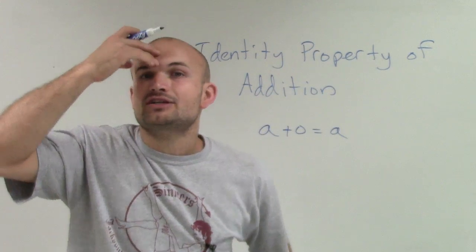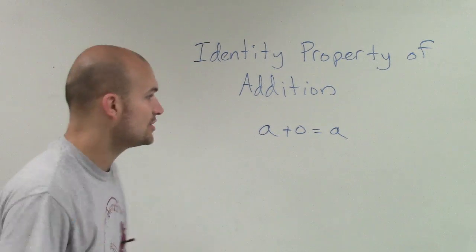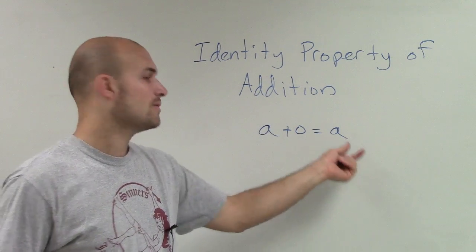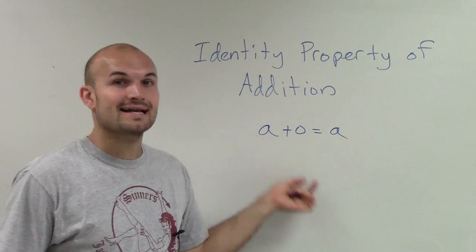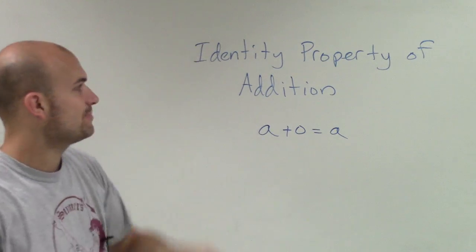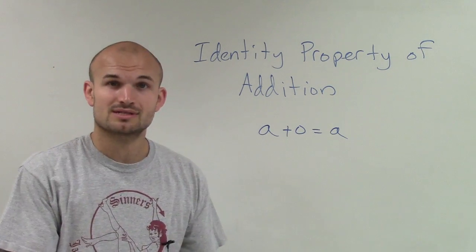And that is extremely important, especially when you're going to get into solving equations, for you to understand that we want to isolate the variable. We want to get a by itself. So if we can always get it to be adding zero, then we can just rewrite it as a. So the identity property of addition states that any real number plus zero equals itself.